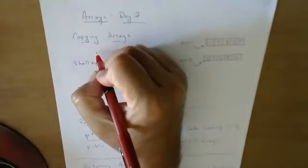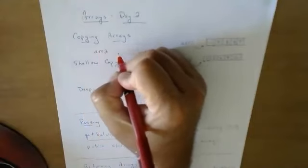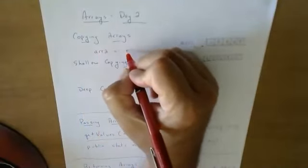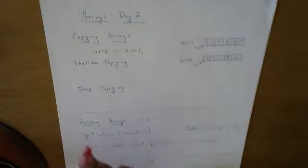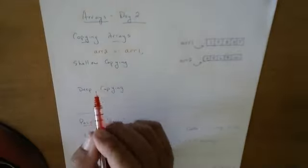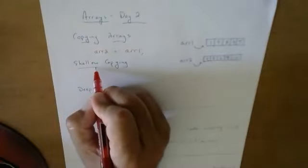But before we move on, we're going to start out with this first section on copying arrays. So if I ever took a statement and I said something like this, I'd like array two to get the value of array one. If I said array two gets the value of array one, I'd like to copy. Well, what I've just done is this thing called shallow copying.